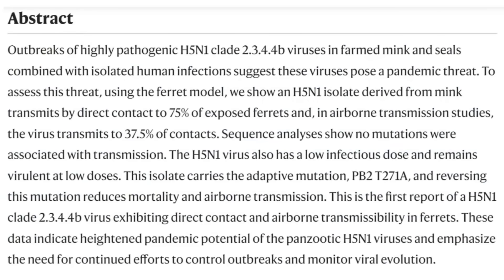The abstract states that outbreaks of highly pathogenic H5N1 clade 2.3.4.4b — the same clade currently circulating, though not the exact same virus — in farmed mink and seals, combined with isolated human infections, suggest these viruses pose a pandemic threat. Using a ferret model, which is used because of the similar airway anatomy, they show an H5N1 isolate derived from mink transmits by direct contact to 75% of exposed ferrets. The key question, however, is whether airborne transmission via aerosolization is also possible.